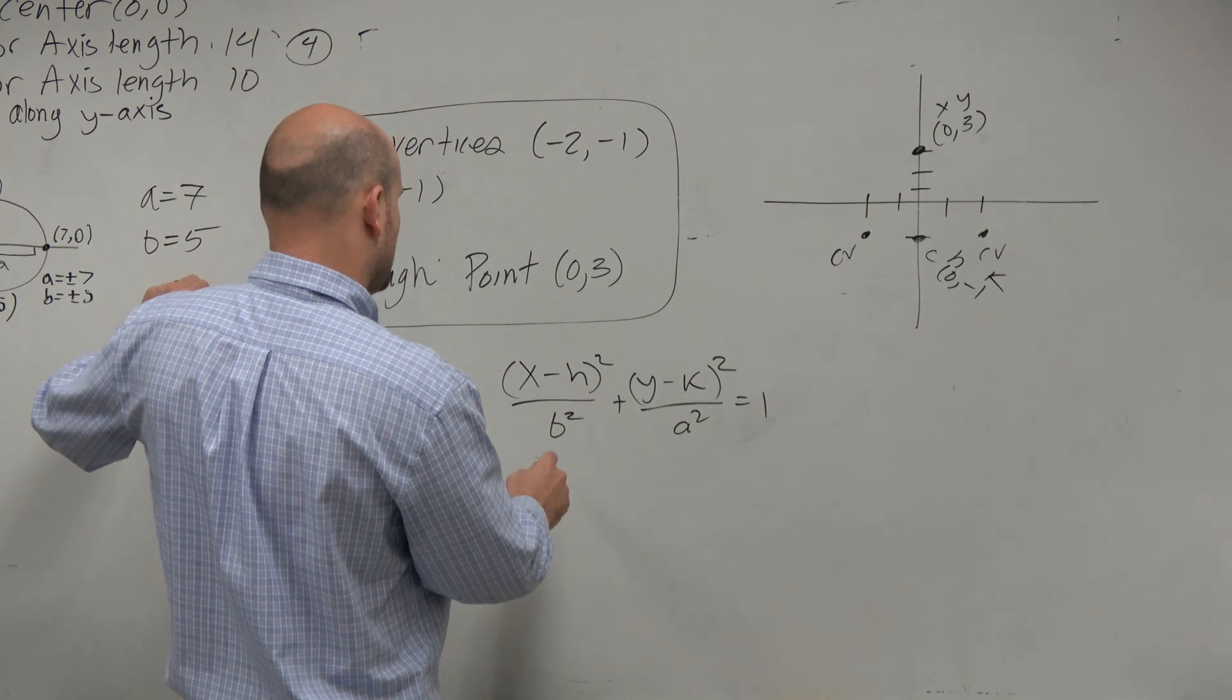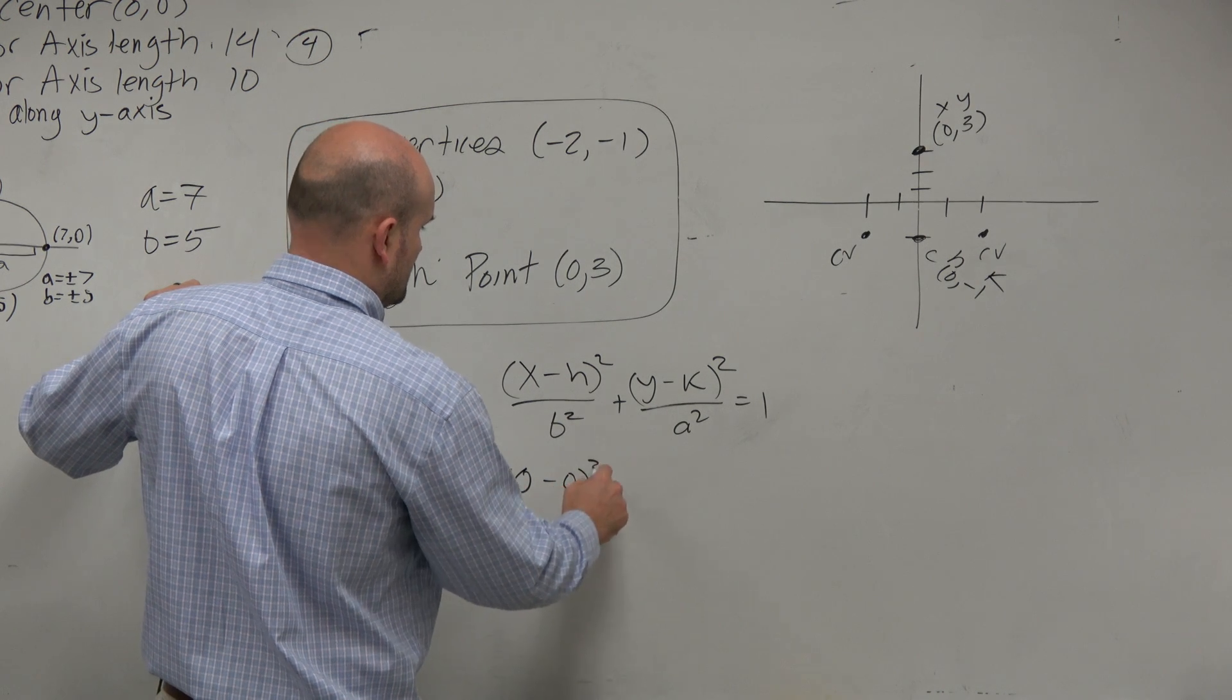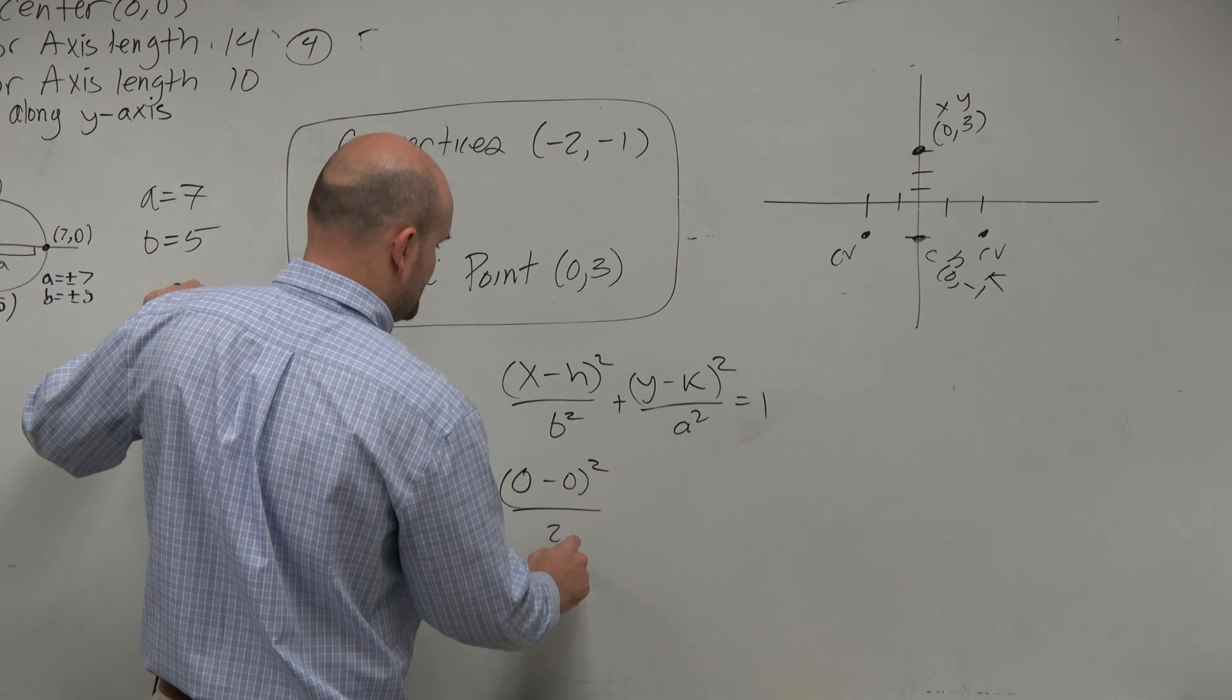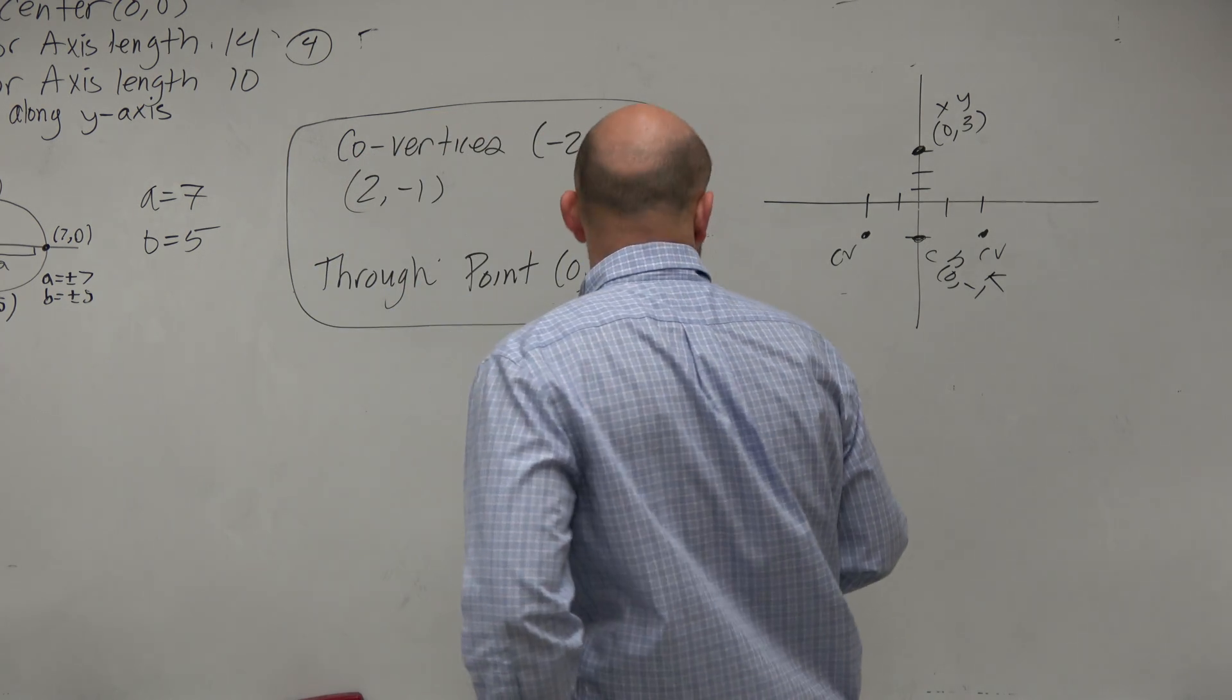Well, let's plug in everything. So I get 0 minus h, which is 0, squared over b squared, which is 2 squared, plus y, which is 3...